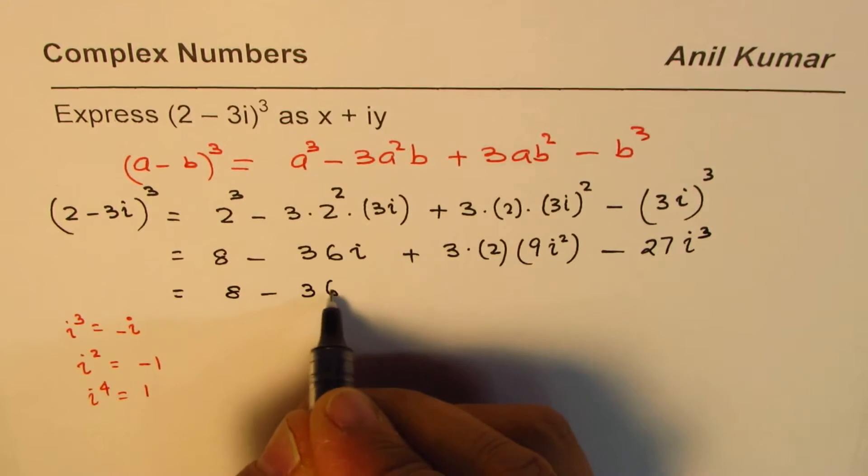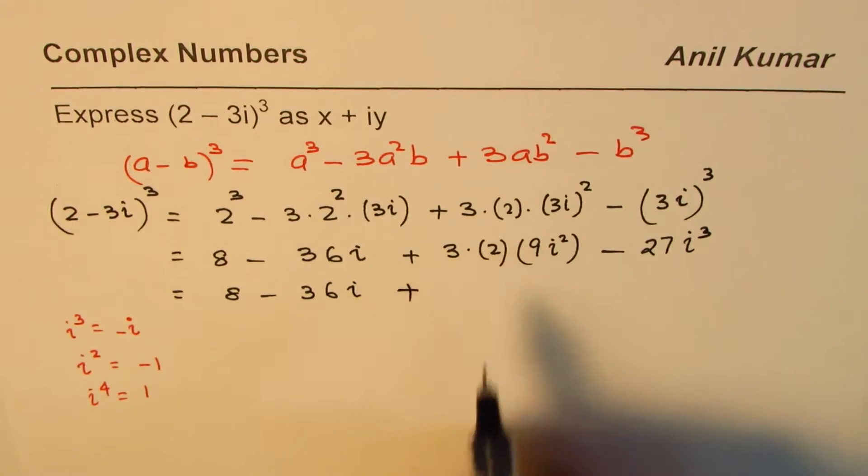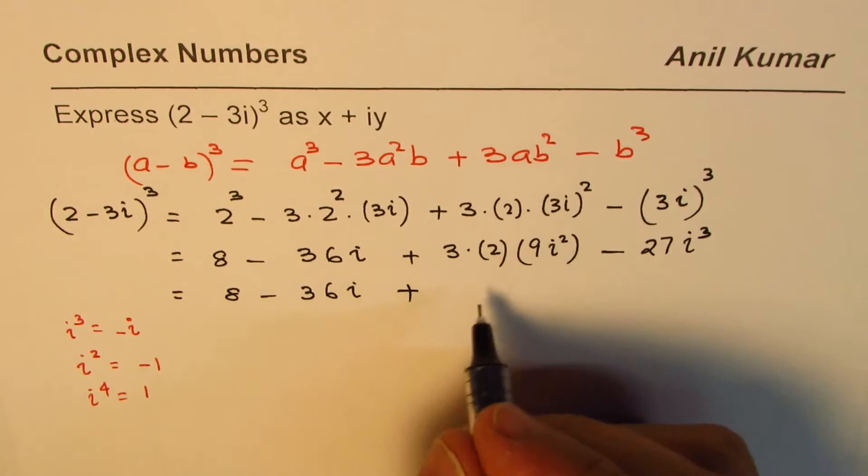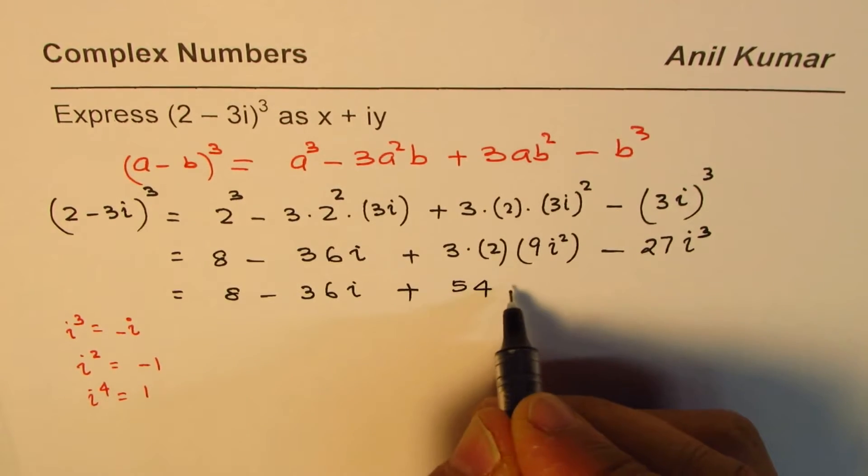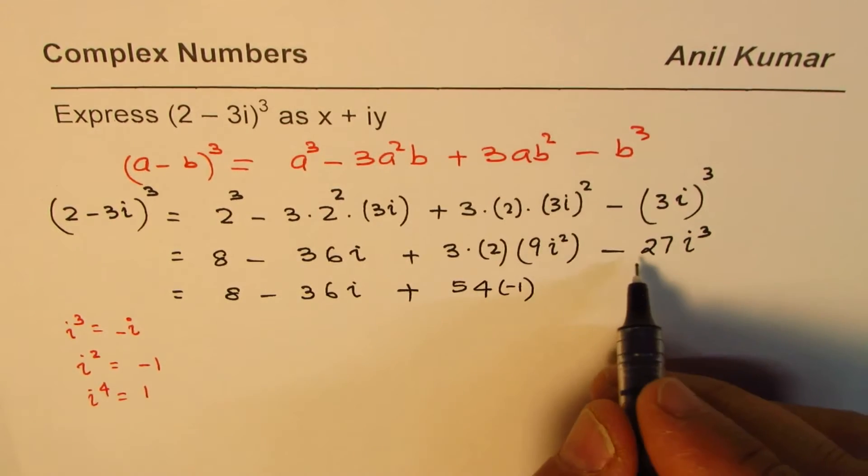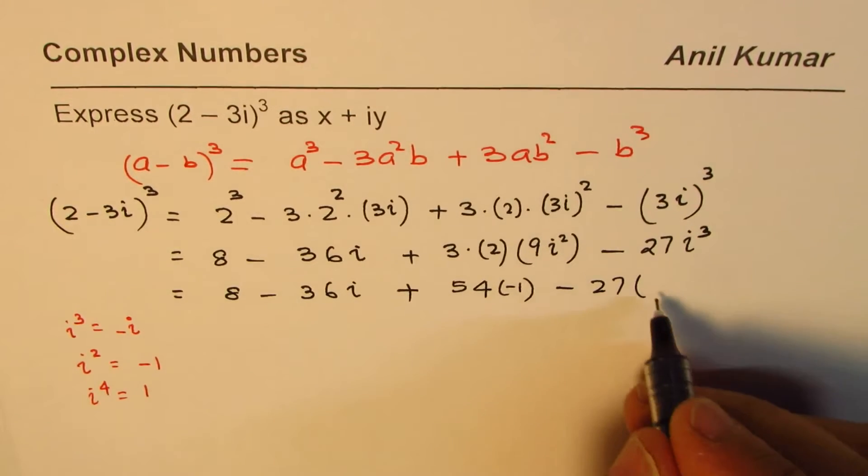So we have 8 - 36i plus 6 times 9, which is 54, times i² which is -1, and we have -27i³ which is -i.